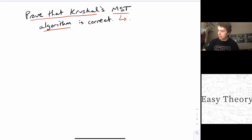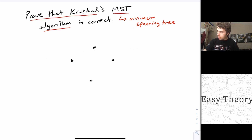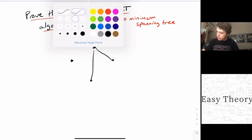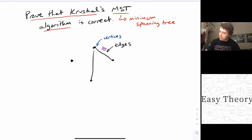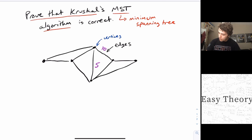So what does MST stand for? It stands for the minimum spanning tree. So what in the world is this? Let's say that we have a graph here. By graph, I mean vertices, which are these points. The vertices are the points, and the lines that are connecting them are edges. On each edge, in this case, we're going to have a particular weight. Let's just put an edge weight on each one of them.